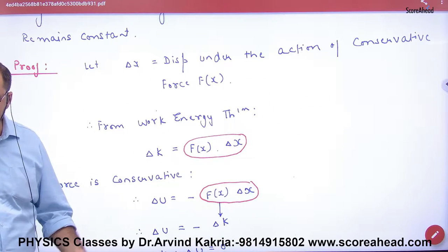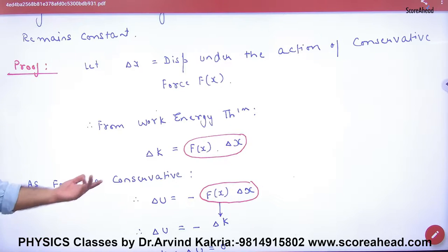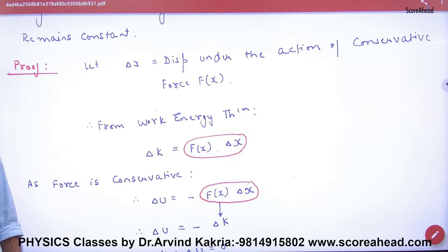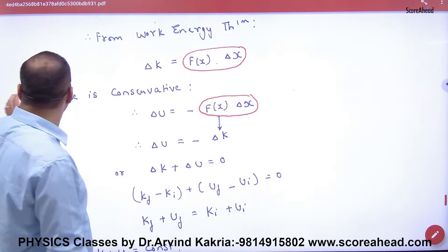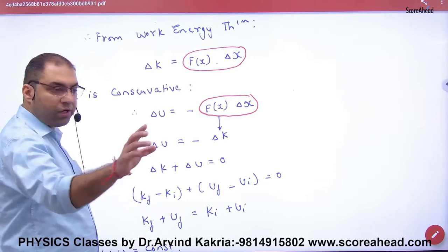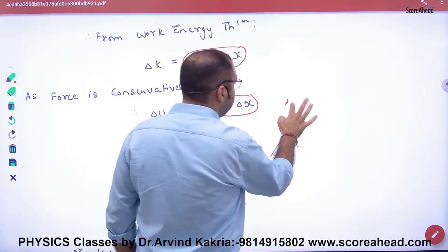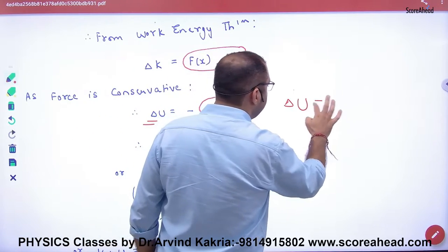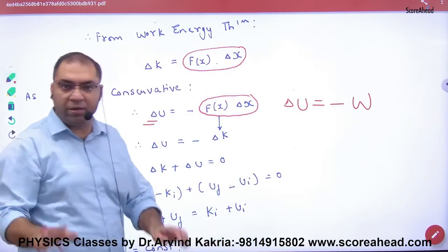इसका proof दो तरीके से किया हुआ है — एक mathematical proof है और एक experimental proof। Mathematical proof यह कहता है कि change in potential energy delta U क्या होता है: delta U = -W।